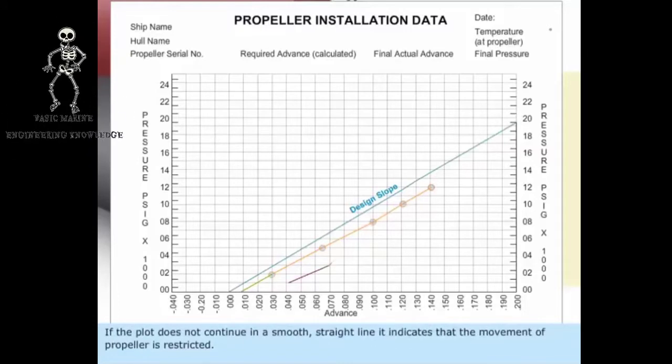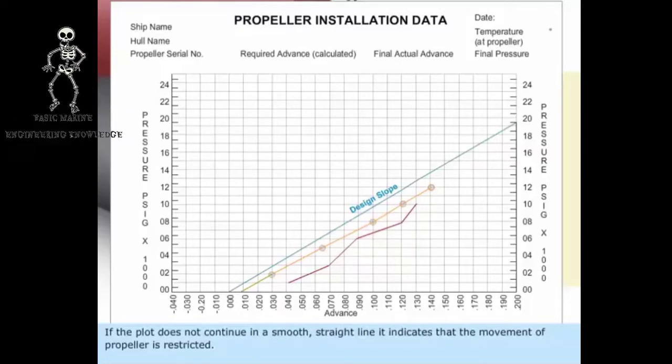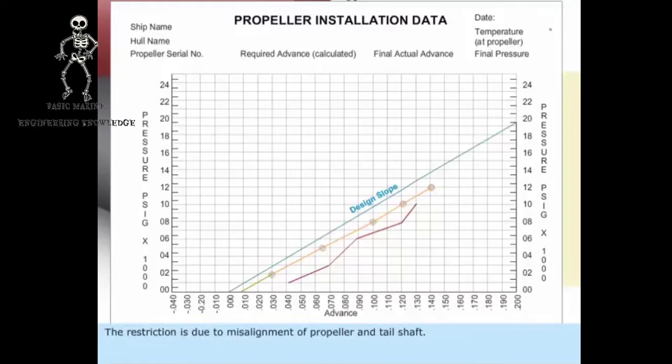If the plot does not continue in a smooth straight line, it indicates that the movement of propeller is restricted. The restriction is due to misalignment of propeller and tail shaft.